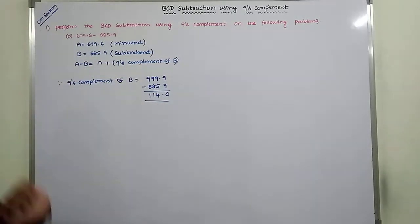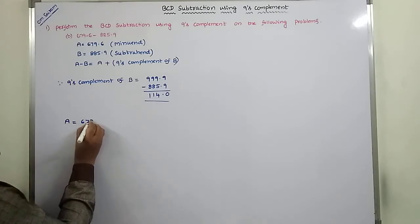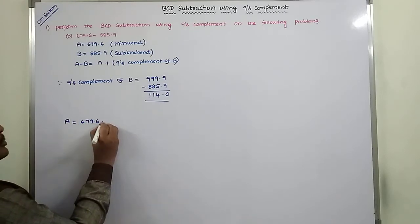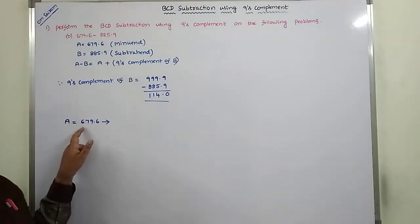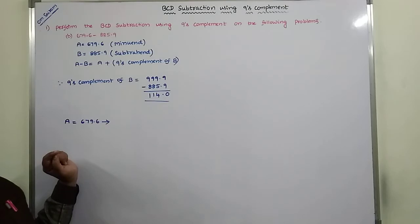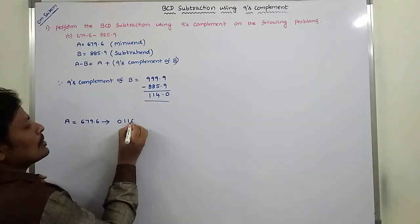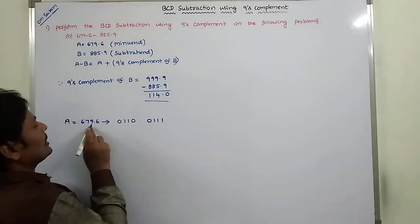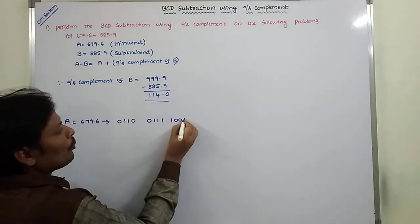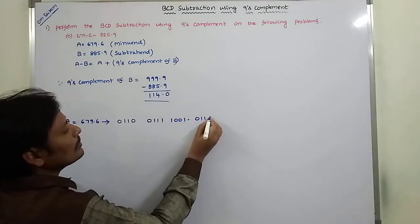Once we have the nice complement of B, it is added to the minuend A. The minuend A equals 679.6, represented in BCD form where each digit is a 4-bit binary group. 6 is 0110, 7 is 0111, 9 is 1001, and after the decimal point 6 is 0110.